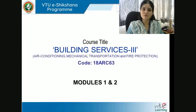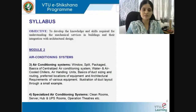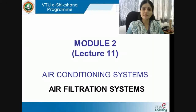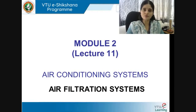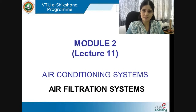We are currently doing modules 1 and 2, and this is lecture number 11 dealing with air filtration systems in air conditioning systems. Previously under module 2, we have completed the introduction to AC systems, the working principle, the types — 5 types under unitary AC and central air conditioning 2 types — and ducting and air distribution system design for large scale central AC.